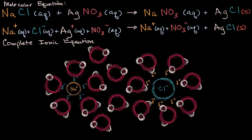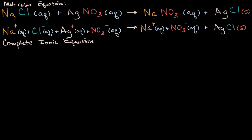Why is it called the complete ionic equation? Because we're showing the individual ions as they're dissociated in water. Now, what would a net ionic equation be? One thing you notice is that on both sides of this complete ionic equation, you have the same ions that are dissociated in water. For example, on the left-hand side you have sodium dissolved in water, and on the right-hand side you also have sodium dissolved in water. Since it appears on both sides, you could view it as a spectator — and that's actually what it's called: a spectator ion.